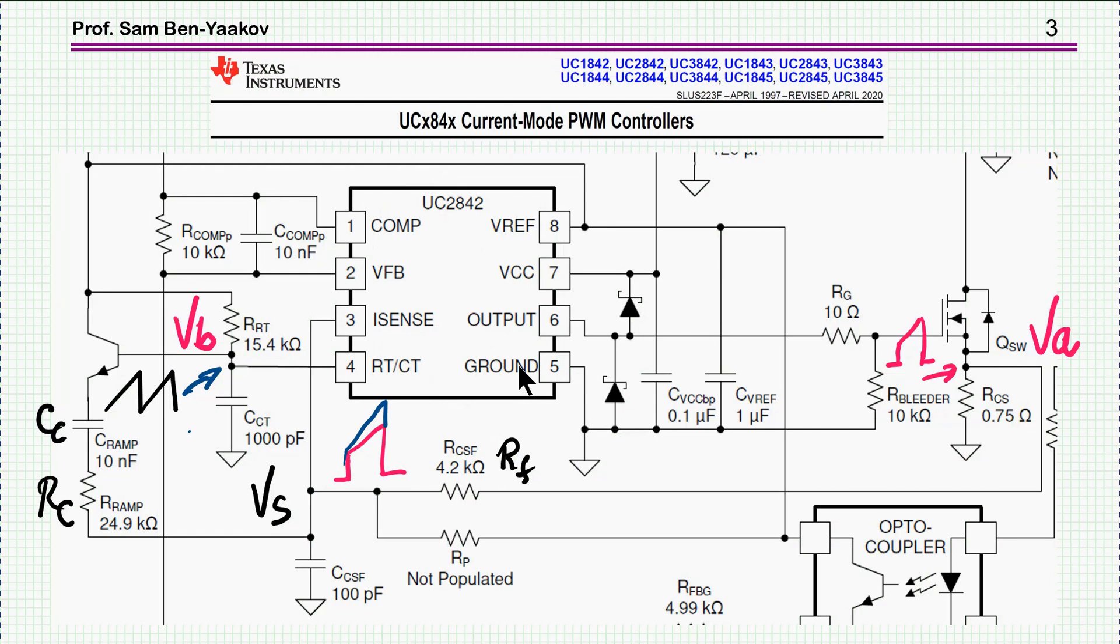This arrangement is done here in this controller, which is a peak current mode controller. Again, I'm not going into this subject at all. Just to say that we have two signals here. Here is one signal. And here is a follower, an emitter follower.